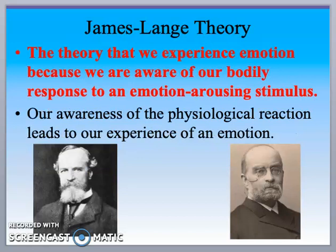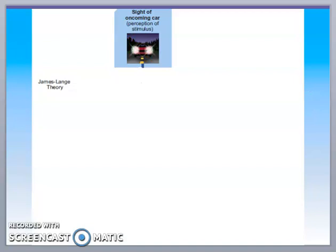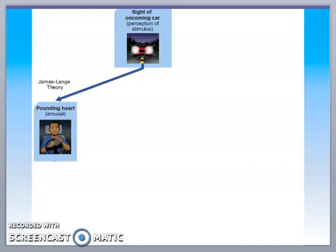The James-Lange theory of emotion says that we experience emotion because we're aware of our bodily response to an emotion-arousing stimulus — we're aware of what's going on around us. So if we see an oncoming car right in front of us, the James-Lange theory says our heart starts to pound and then fear sets in. The arousal — the pounding heart — comes first, and then the emotion of fear follows.